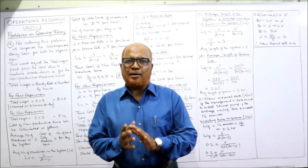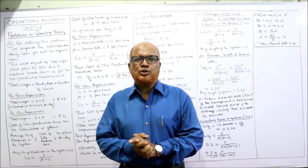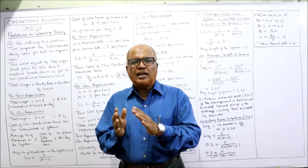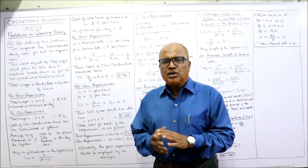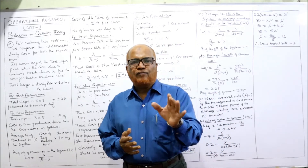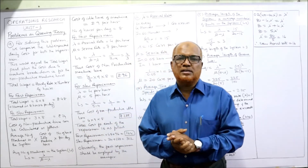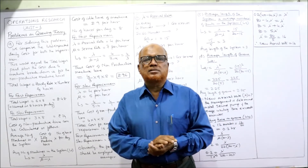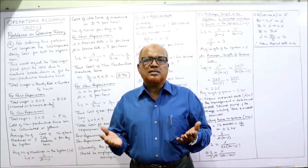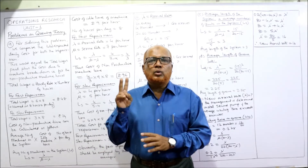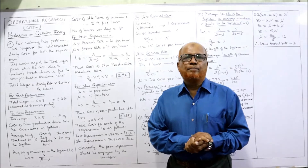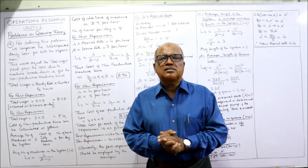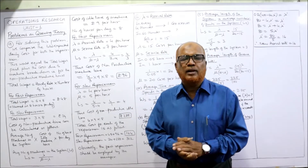Hello viewers, welcome to my channel. I'm Hashem Ali Khan. So far, eight problems have been completed on queuing theory. In this video, two more problems — the 9th and 10th — I'm going to explain. Every problem is based on the formulae. The formulas are dependent on two things: arrival rate lambda and service rate mu.